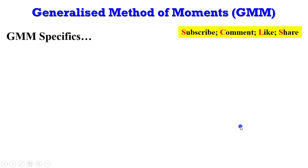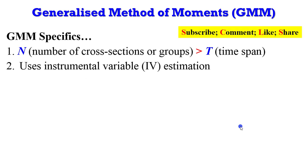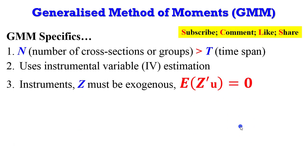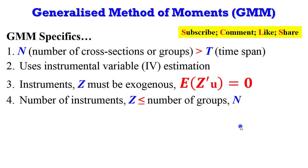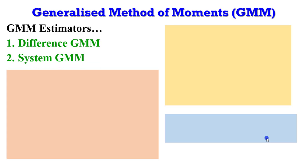Let me explain some GMM specifics. N, the number of cross-sections or groups, must be greater than T, the time span in your data. GMM uses instrumental variable estimation; the instruments must be exogenous, and the number of instruments must be lower than or equal to the number of groups in your panel.